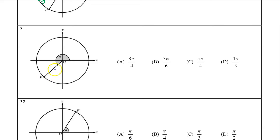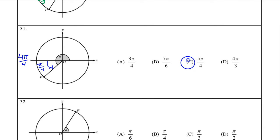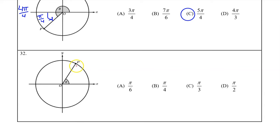On number 31, the terminal ray falls right in the middle of the quadrant. So we know that the reference angle is pi over 4, and theta is some multiple of pi over 4. Let's think of pi as 4pi over 4. Then we can see that theta is one multiple past 4pi over 4, so it must be 5pi over 4. And the answer is C. For number 32, the terminal ray is not right in the middle. The reference angle is bigger than pi over 4 — it must be pi over 3. And this is right in the first quadrant. So the answer is simply pi over 3.